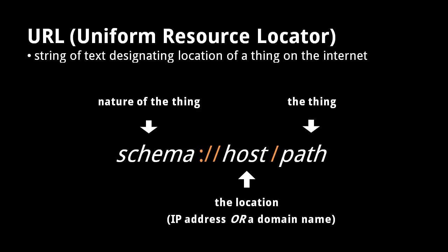A URL, a Uniform Resource Locator, is a string of text representing the location of a resource on the internet. A URL has three components. The schema denotes the nature of the thing, which most commonly means the protocol by which the thing is accessed. Web page URLs, for example, have the schema HTTP, standing for the Hypertext Transfer Protocol, used to retrieve web pages. The host specifies the IP address or domain name of the system from which the resource can be retrieved, and the path specifies the particular resource on that system. The format of the path is specified for certain schemas, but for many schemas, the path could be any sequence of characters without white space.